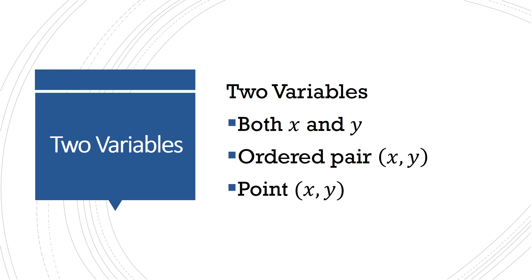When you start dealing with multiple variables, we can't necessarily display them on one number line because we have two variables. Generally, when you deal with two variables, they are named x and y, though you can use whatever variables you want.